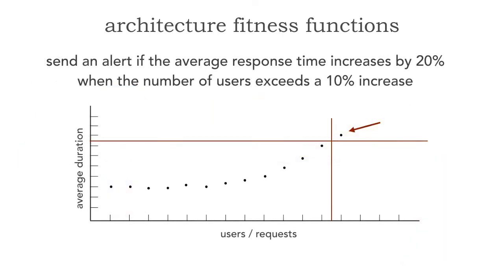Lastly, as we saw in Lesson 71, we can also use fitness functions in an automated, continuous, holistic fashion to send an alert in production if the average response time ever increases by 20% when the number of users exceeds a 10% increase — looking for an intersection between that correlation when measuring scalability.